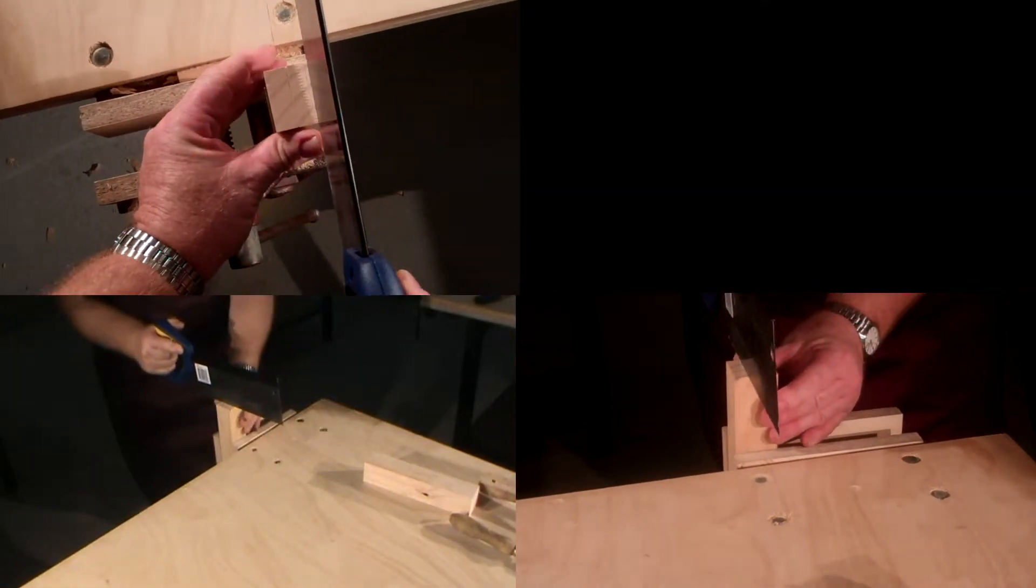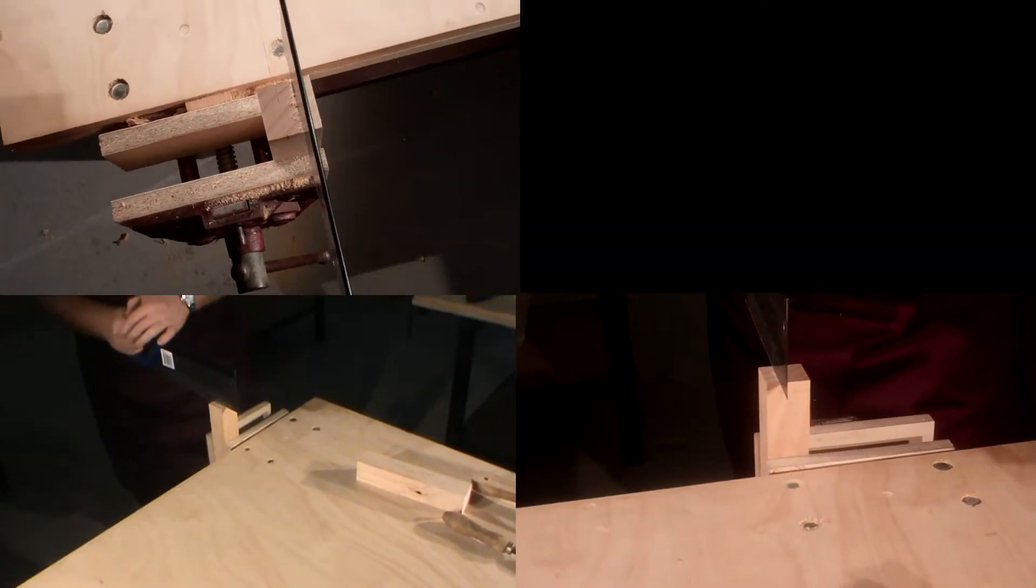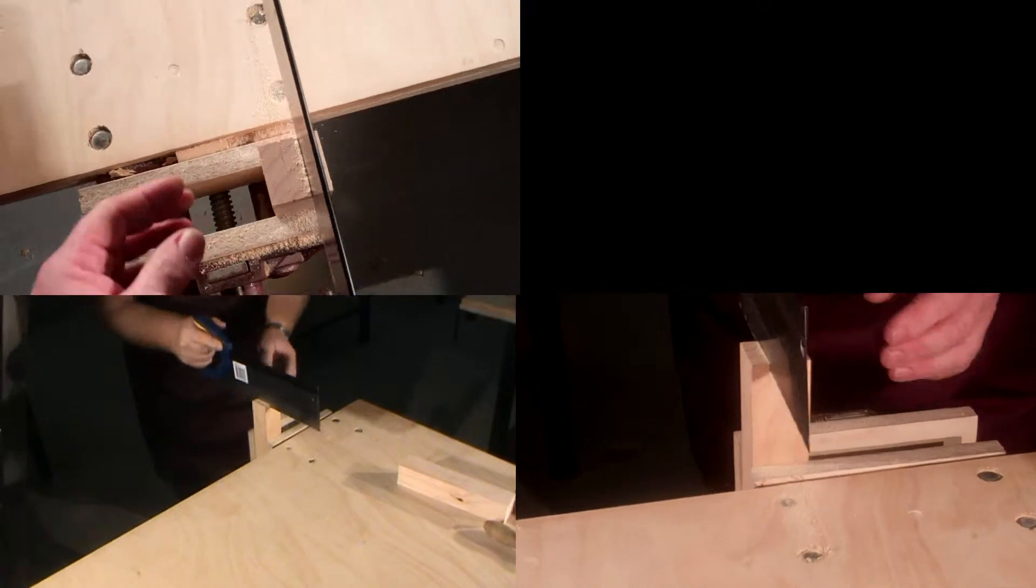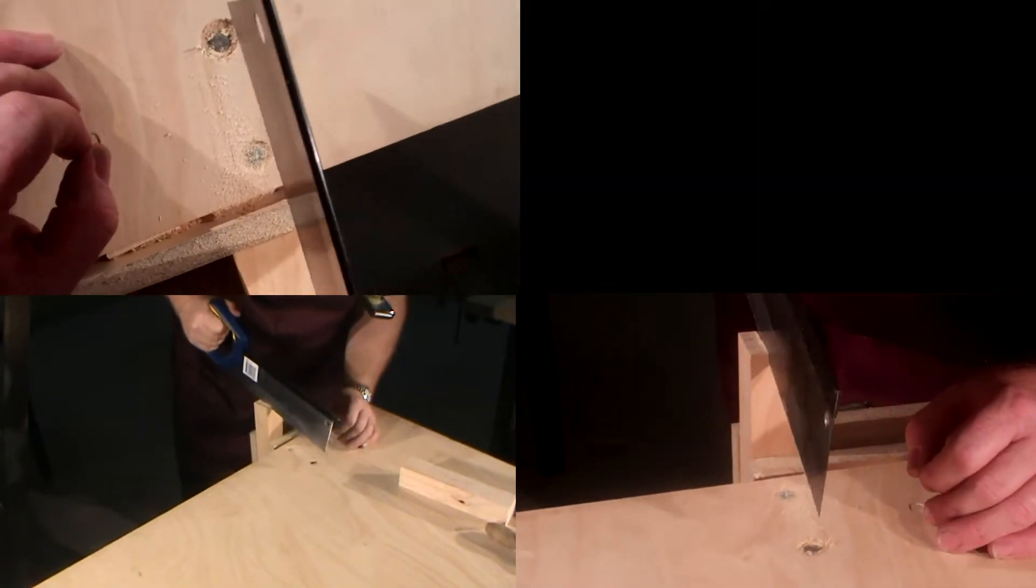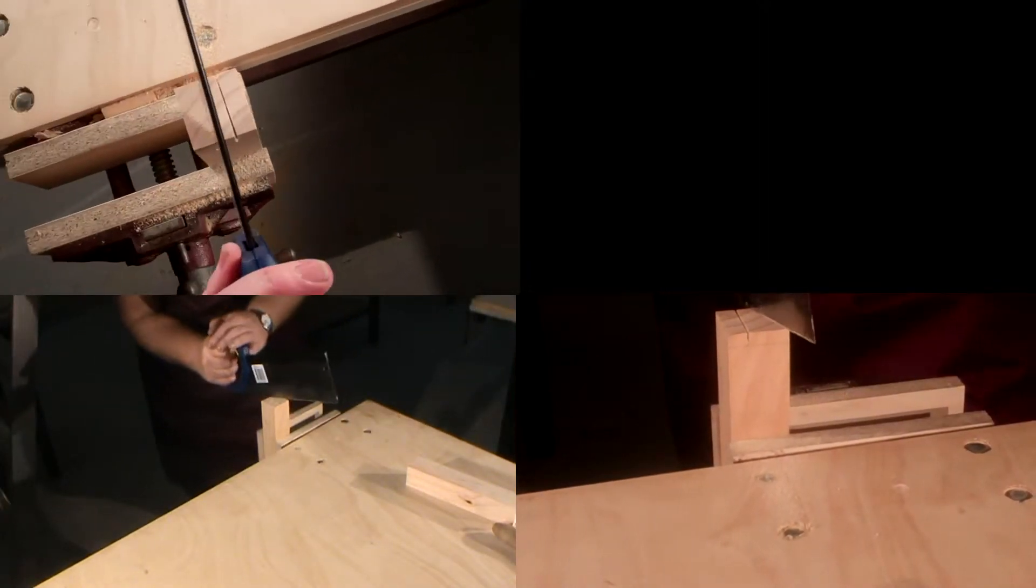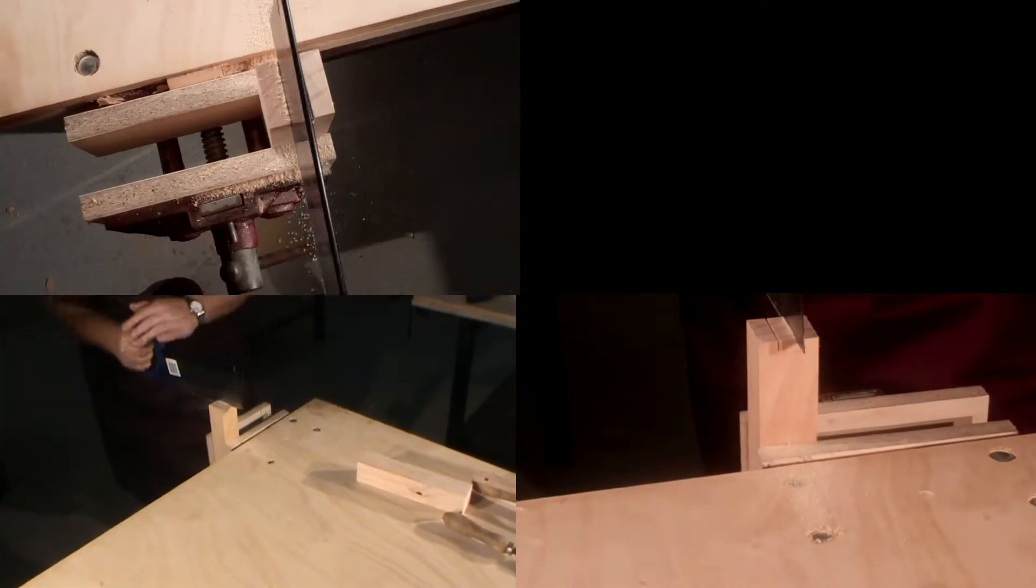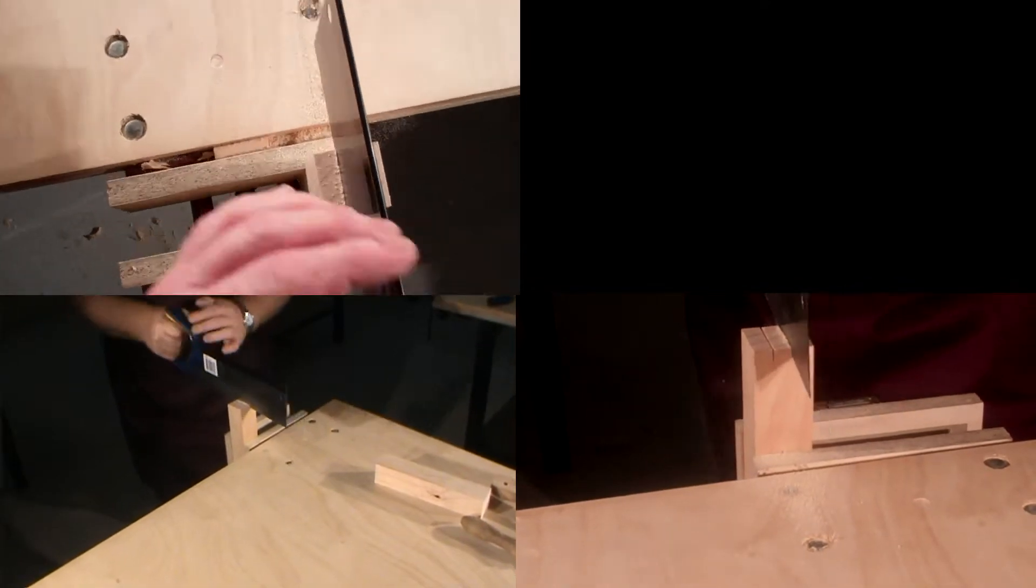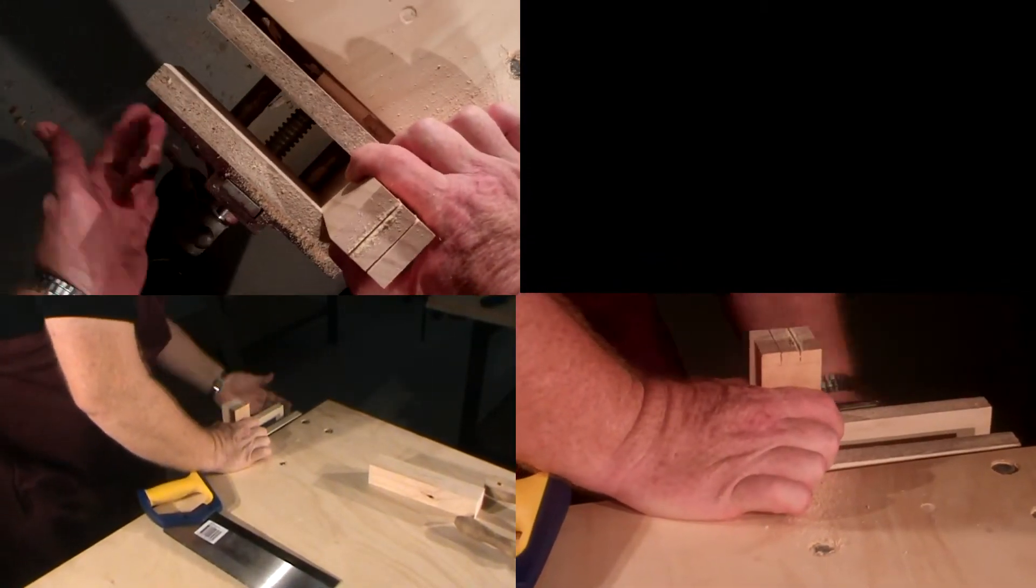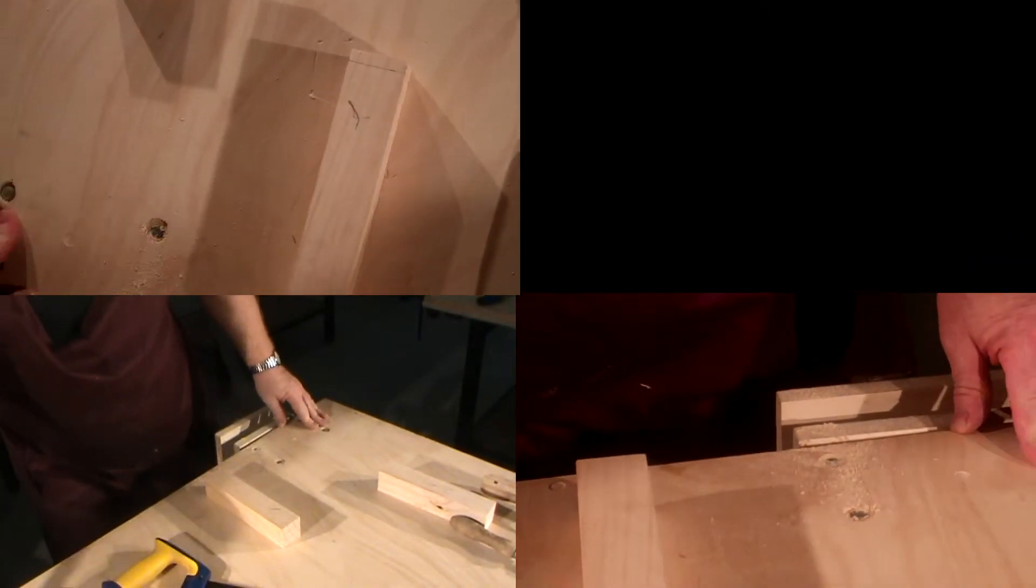We'll do our two ripping cuts first. We only want to go down to the 10mm mark, same on the other side. Now we'll use our bench hook.